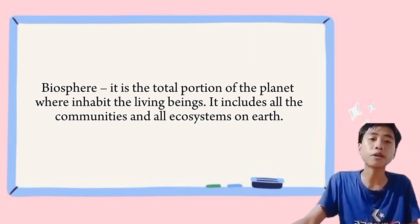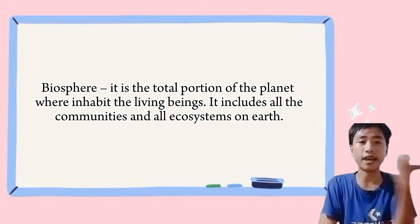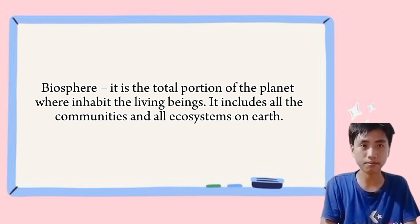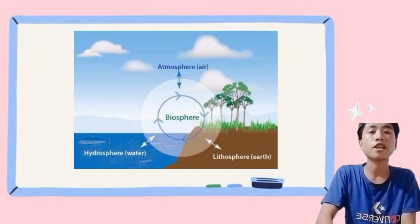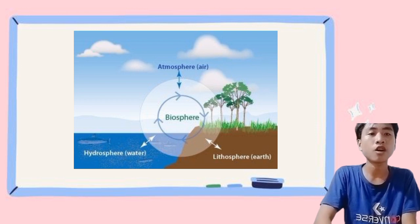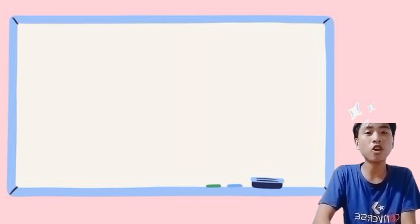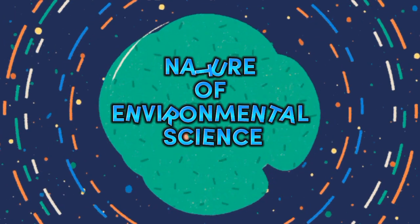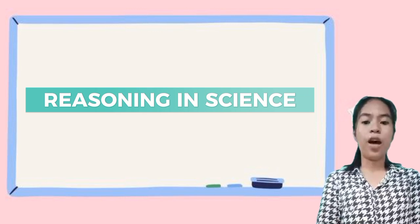The last level is the biosphere. The biosphere is the total portion of the planet where living beings inhabit. It includes all the communities and ecosystems on Earth. The biosphere includes all the different ecosystems on Earth, from the deepest oceans to the highest mountains. That concludes my report, and the next topics will be presented by Ms. Janyu. Thank you, Mr. Adlin. For the next topic, we have reasoning in science.